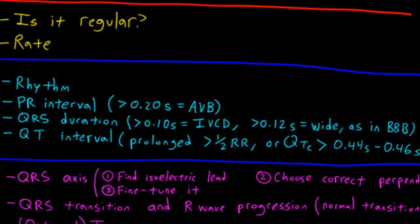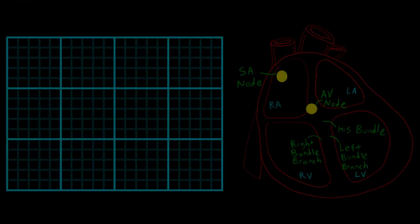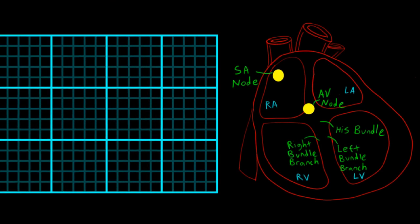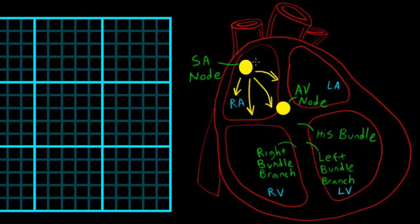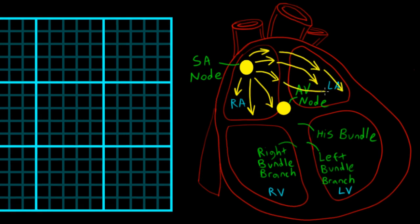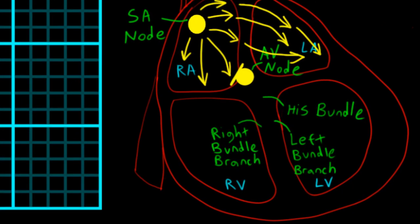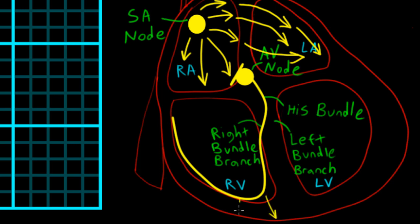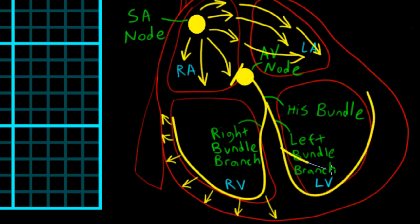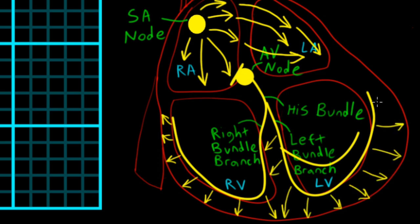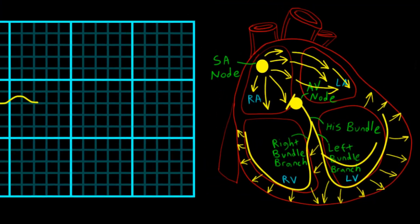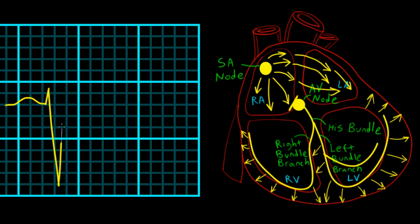After I've identified my bundle branch block, I come back and finish looking at the intervals. To understand bundle branch blocks, let's take a look at the normal sequence of ventricular activation. Here's our impulse starting at the sinus node, spreading across the atria to cause atrial depolarization, represented by our P wave. Following a brief AV conduction delay, the impulse quickly travels down the specialized conducting fibers of the Hiss-Purkinje system, allowing rapid transmission across both ventricles — producing simultaneous depolarization of both chambers within about 80 milliseconds, giving us a nice narrow QRS complex.